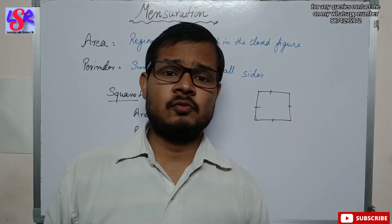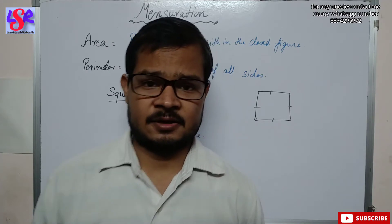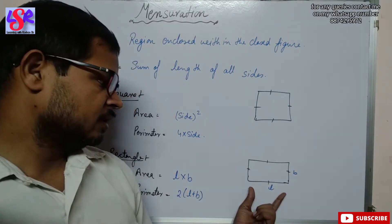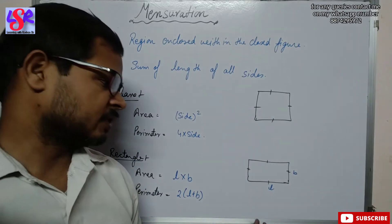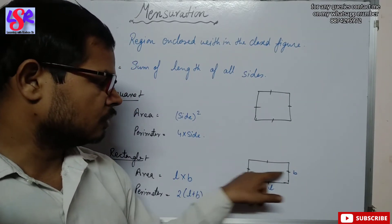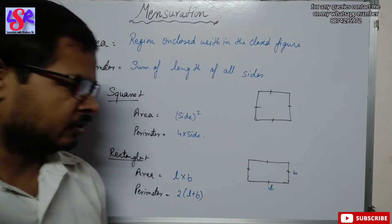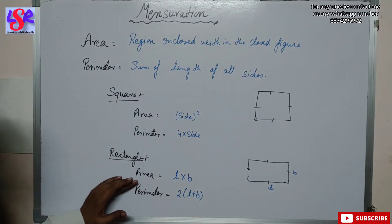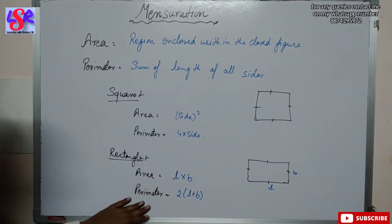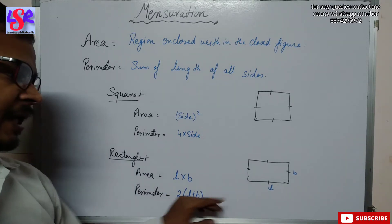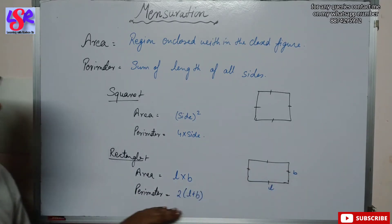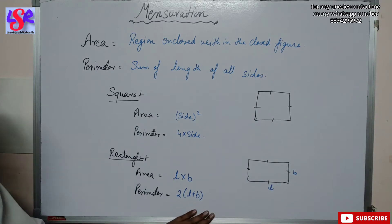The next figure is a rectangle. In the case of a rectangle, there are two types of sides: length and breadth. Opposite sides are equal. The area of a rectangle is length into breadth, whereas the perimeter is 2 times (length plus breadth), that is 2L plus B.